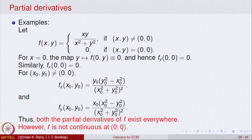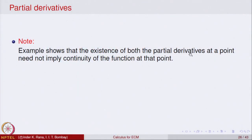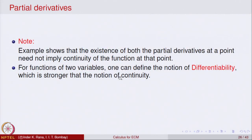This is how one analyses continuity of functions of two variables at a point. This example shows that the existence of both partial derivatives at a point need not imply continuity of the function at that point. Unlike one variable, where differentiability implies continuity, the mere existence of partial derivatives is not sufficient to ensure continuity. One can define a stronger notion of differentiability for functions of two variables, but we will not go into that in this course.